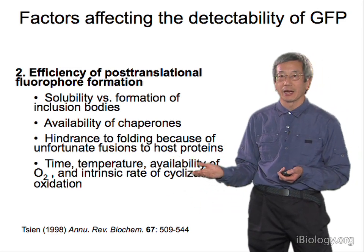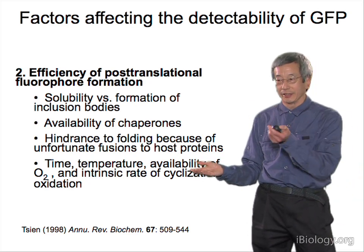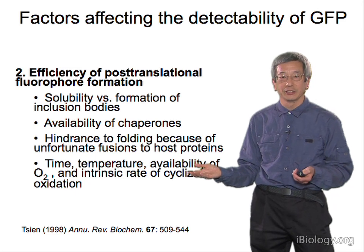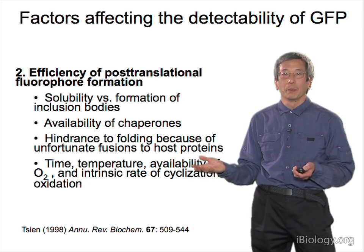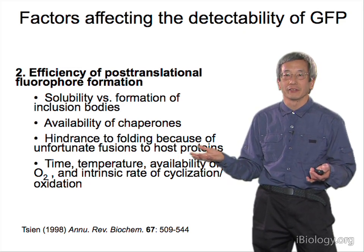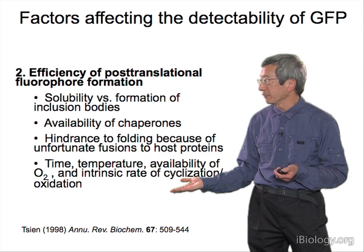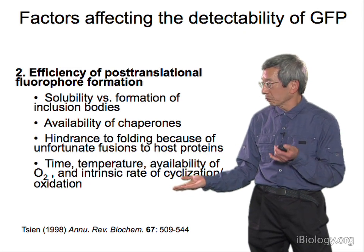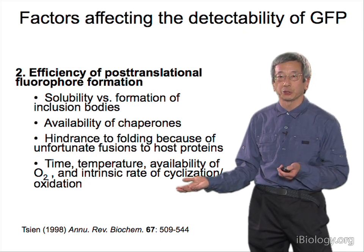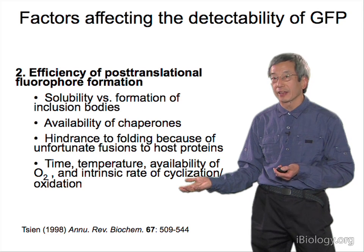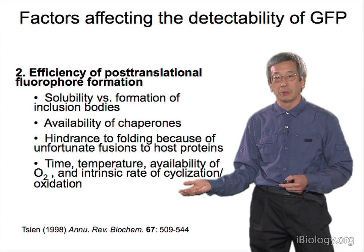You do have to give it time — those post-translational reactions in the complicated sequences, as shown in the comparison with asparagine-glycine, all take time. We now have some variants that can mature in only a few minutes, but it originally took four hours from the original jellyfish GFP. That has been improved a lot by further engineering, and we now have fairly warm temperature-tolerant versions. You must also have oxygen present at least during maturation. Once the protein is mature, oxygen is no longer needed — GFP works fine without it — but it did need oxygen once per molecule during maturation.